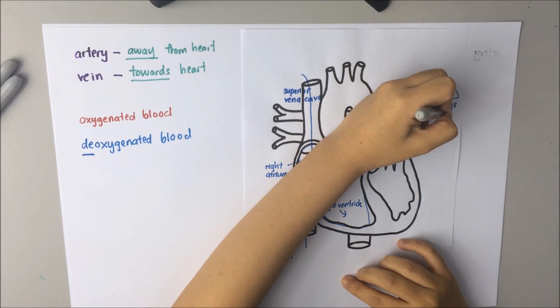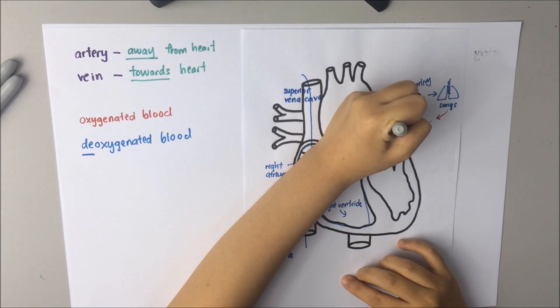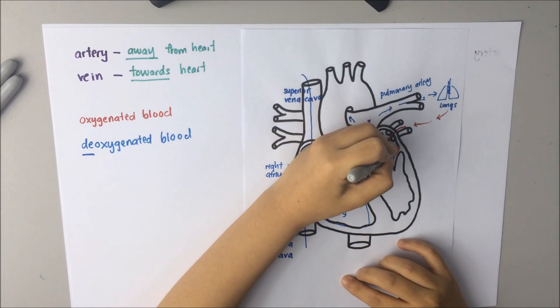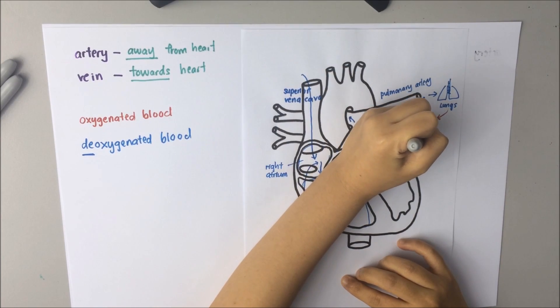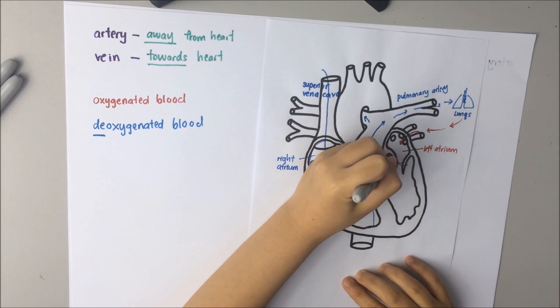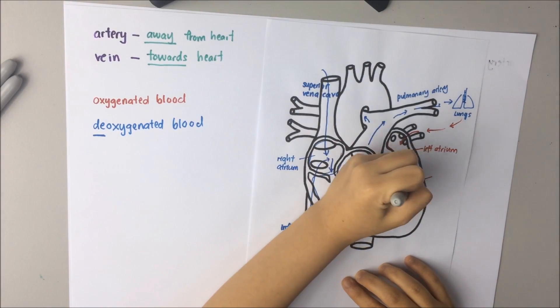The oxygenated blood then returns to the left side of the heart through pulmonary vein. Remember, vein towards the heart. From the left atrium to the left ventricle.